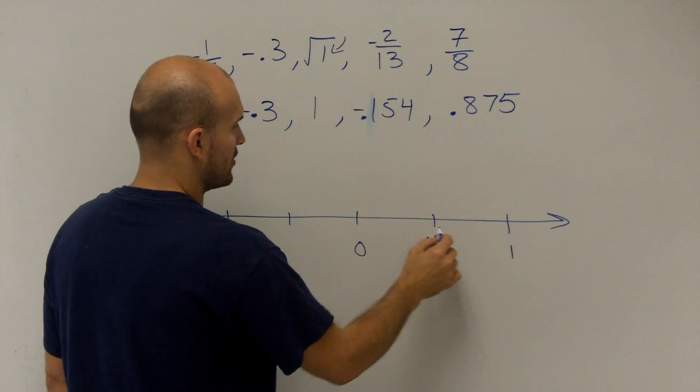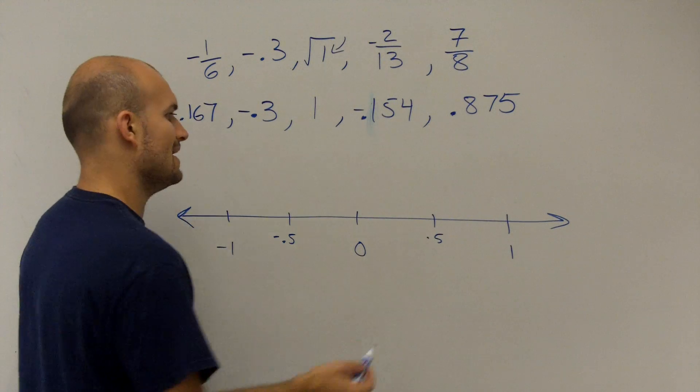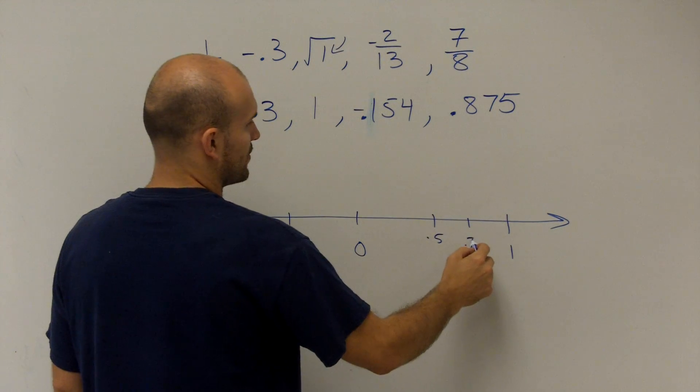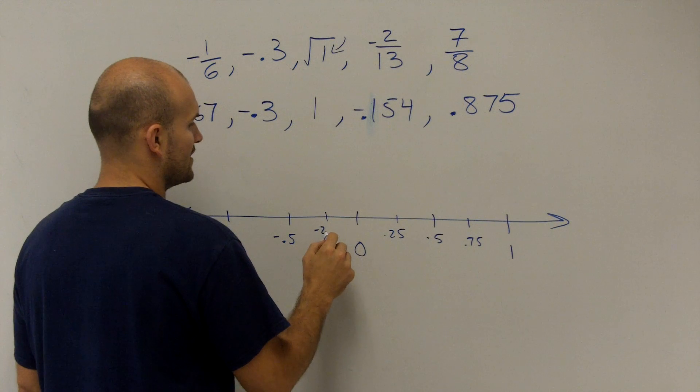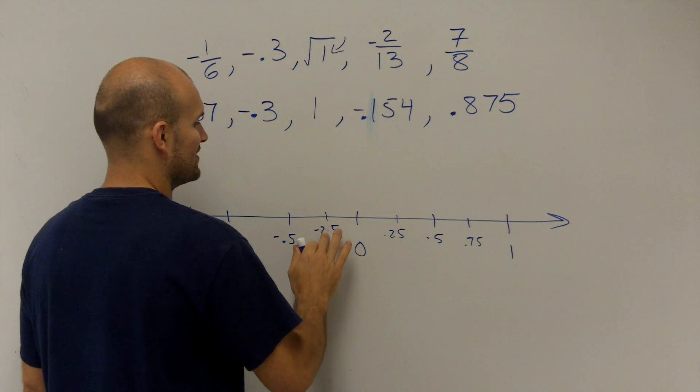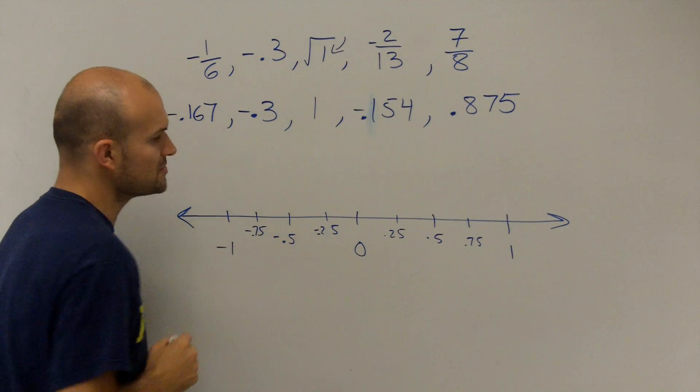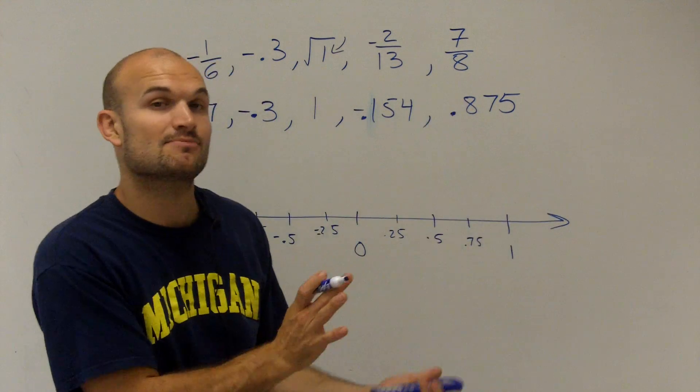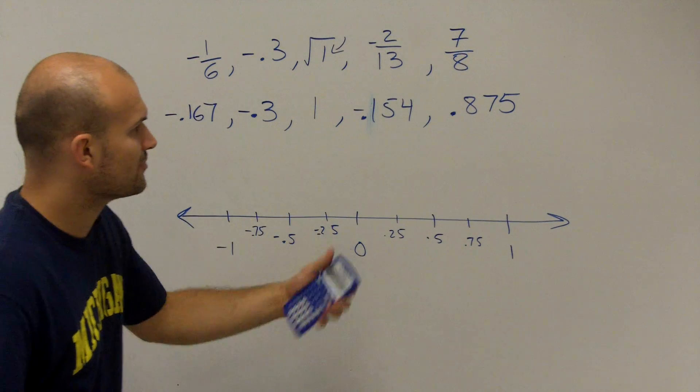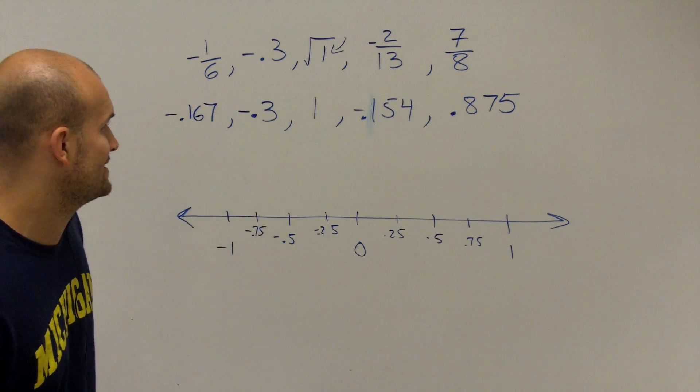So this would be 0.5, negative 0.5, and I could just do 0.75, 0.25, negative 0.25, 0.5, and negative 0.75. So what I'm doing is I'm just breaking it down into fourths. You could break it down into tenths, you could break it down as small as really as you want, but I'm just going to break it down into fourths just to give me an idea because all I'm really looking into doing is just organizing these.